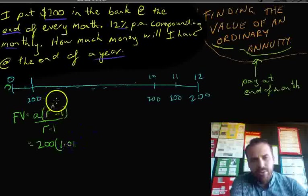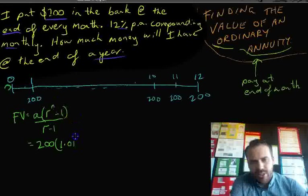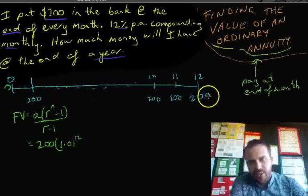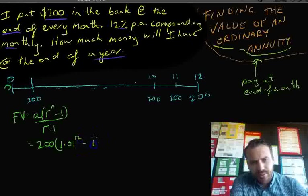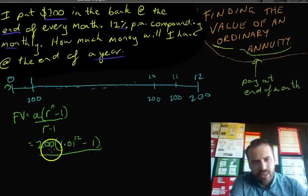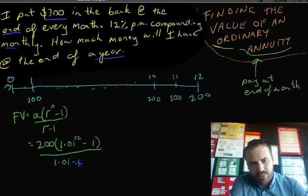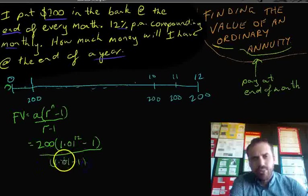Now, n is going to be the number of terms. The number of terms here is going to be 12. If you count up all of your 200s, you'll have 12 there. Minus 1. Over r, the common ratio, minus 1. And you can see what that does. When we do that, we're going to end up with dividing it by 0.01.